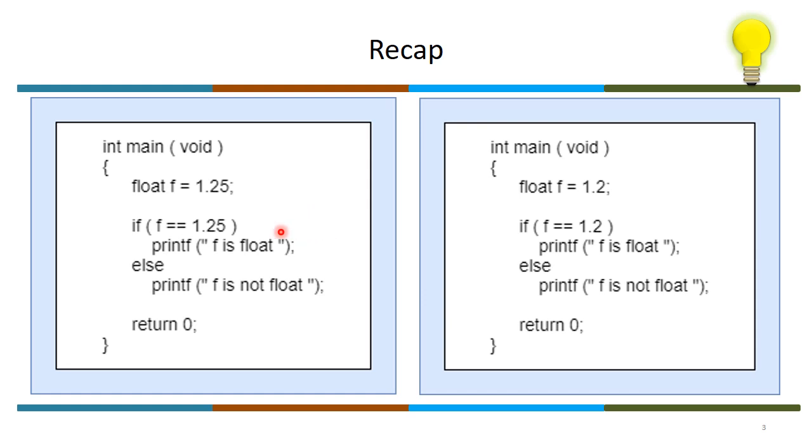Here we need to refer to two standards. If we have to compare the numbers, we have to refer to the C standard. What does the C standard say when the number has to be compared? Here f is of type float and 1.25 is of type double. So now the comparison of two different data types. The type of this number 1.2 will be float.